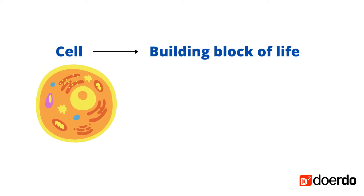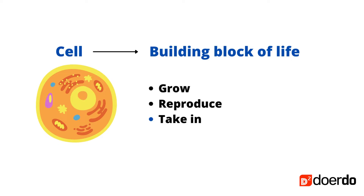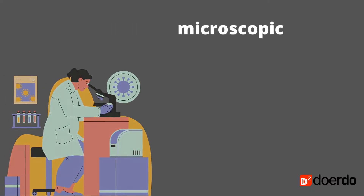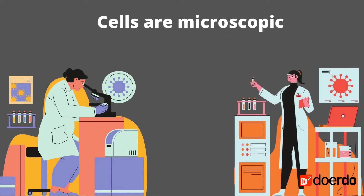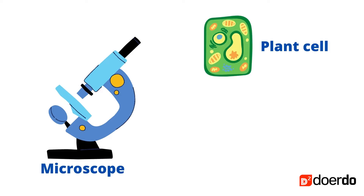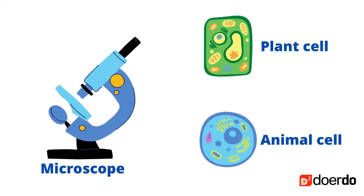A typical cell can grow, reproduce, take in air, food, and water, and it responds to changes. Cells are microscopic and cannot be seen with the naked eye — we need a microscope to magnify them. This is the microscopic view of a plant cell and an animal cell.